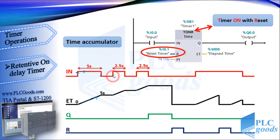When the second pulse reaches the IN input, the ET values start from 5 seconds to 7.5 seconds — continuing accumulation from where it left off.